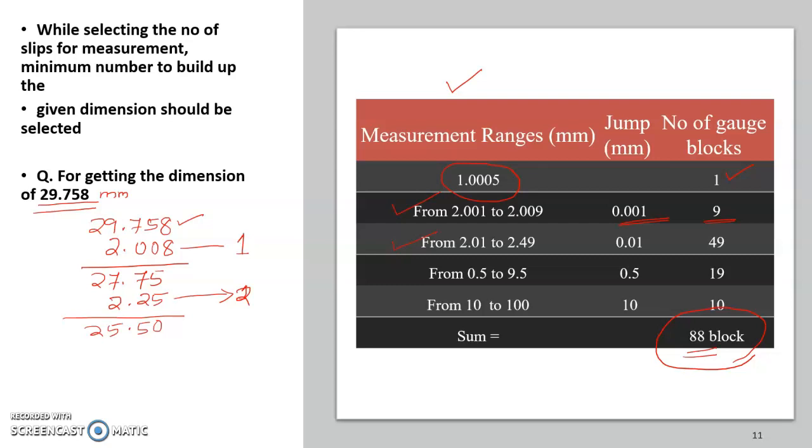Now we have to select another one from this row. From this row we have to choose and it is from 0.5 to 9.5. So in this range we can choose 5.5 and deduct. So 5.5 is our third slip gauge. So that is again 0, then it is 20.